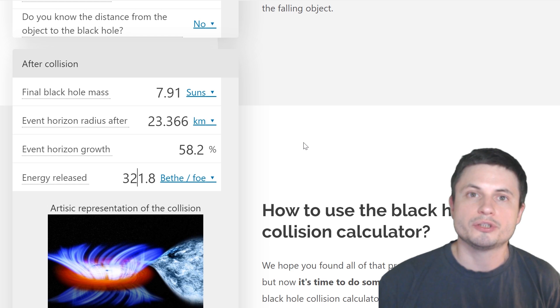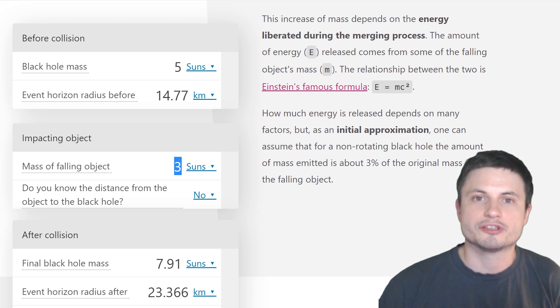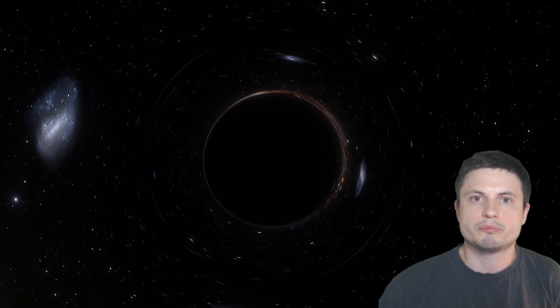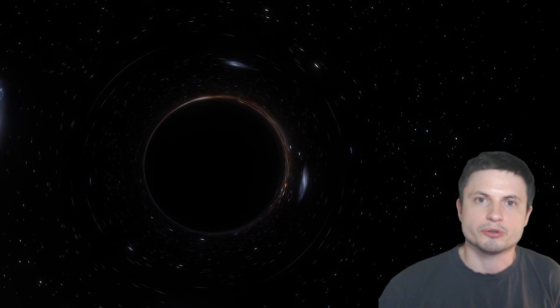And a typical large supernova, type 2 supernova, will normally produce about one foe of energy, normally maybe a little bit more, one and a half or so. So this collision generated 321 times more energy. And that's by using a relatively small size in terms of mass. It's a little bit more massive than our own sun, but way, way less massive than some of the other stars out there.